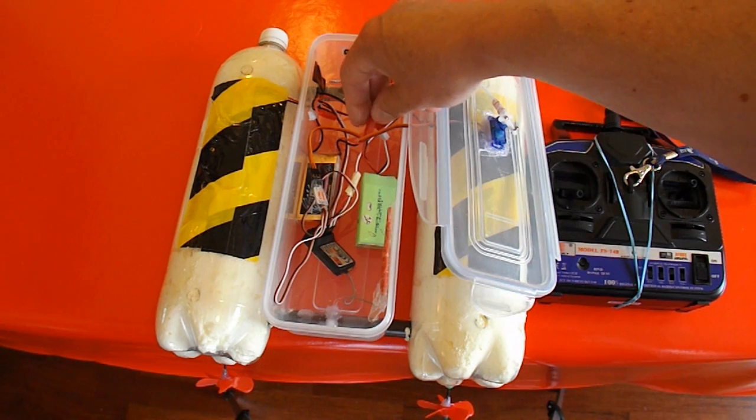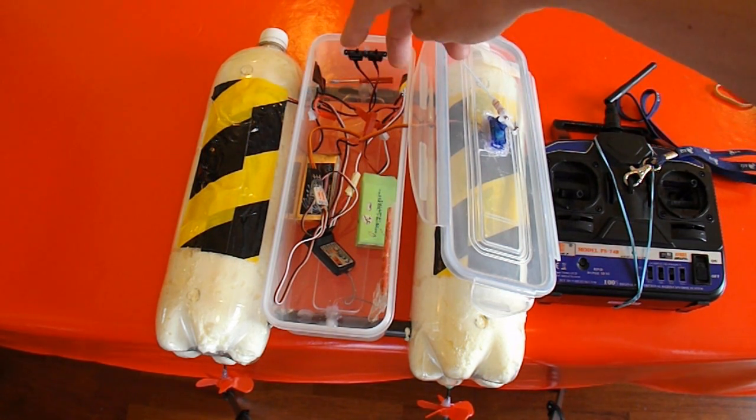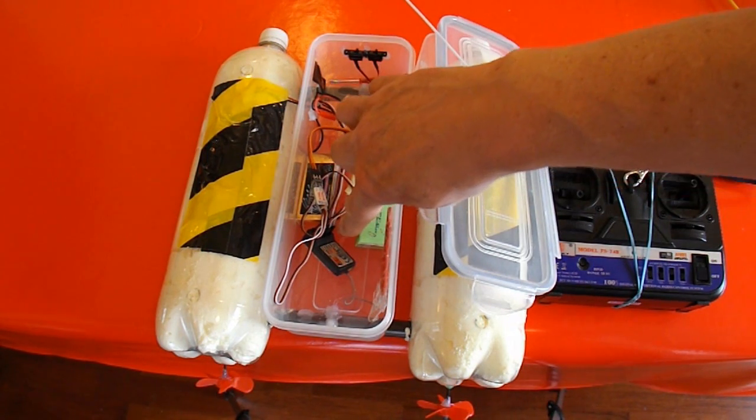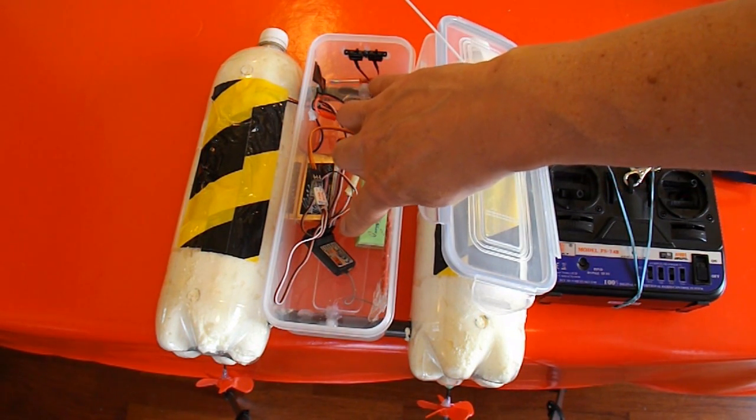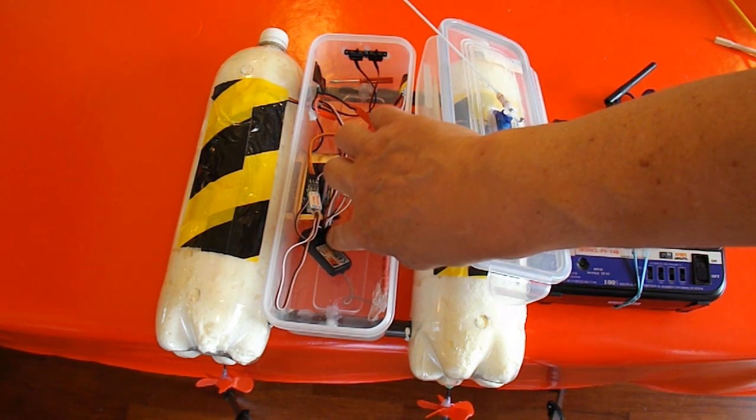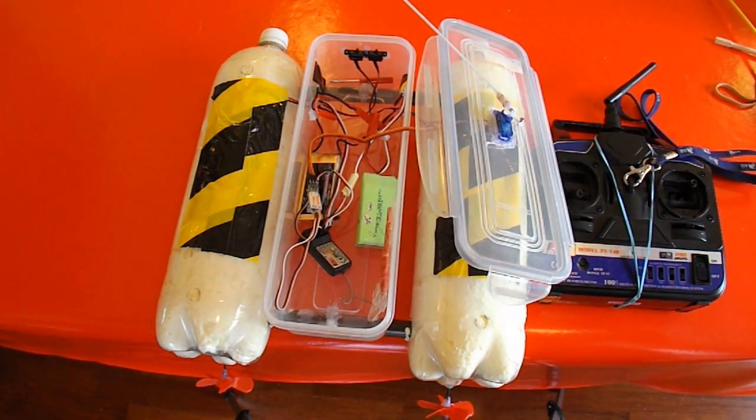So now I've got the left and right motors, through the ESCs obviously, connected straight to the elevator and aileron, port 1 and port 2 on the receiver, channel 1, channel 2.